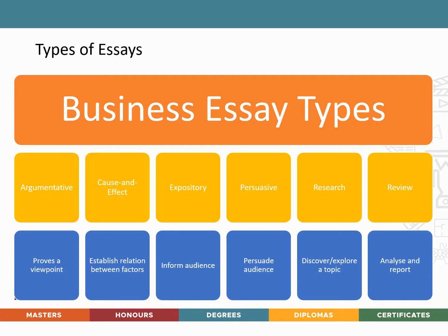The first type of business essay is an argumentative document, and this is where you are arguing for or against something. Then we have a cause and effect business essay, where you want to show your reader that something happened and it led to certain other things happening. Then we have the expository, and here you want to expose — as the word says — something. So you are either exposing the way something is working or exposing information that was not available before.